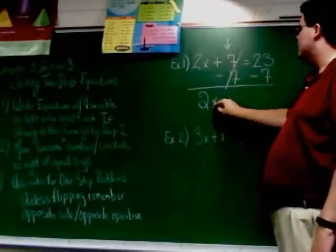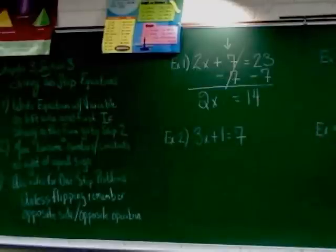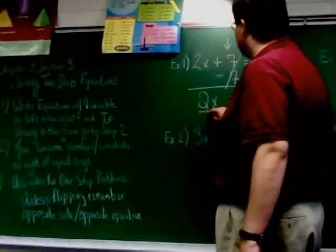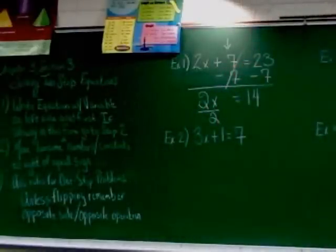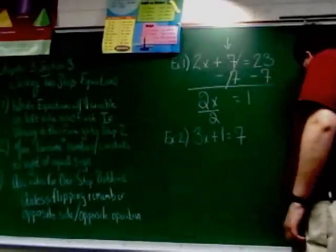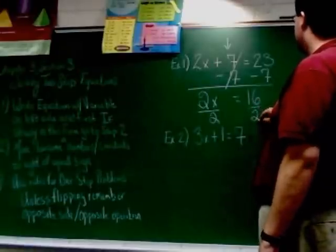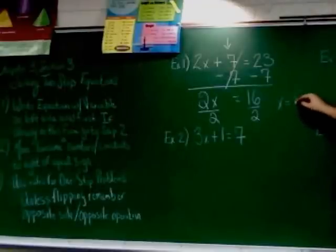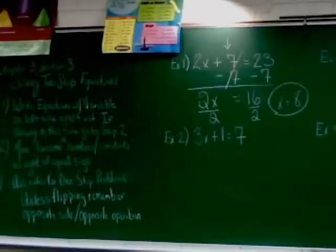So I do that and I get 2x equals 16. Now we're back to the rules for one-step problems that we've used over the last couple days. This is a multiplication problem now. The inverse is division. And on the side of the variable is 2, so I have to divide across by 2. Except I did this again. 23 minus 7 isn't 14, it's 16. 16 divided by 2 is 8.